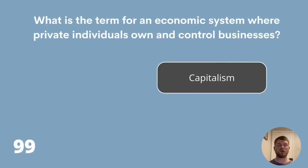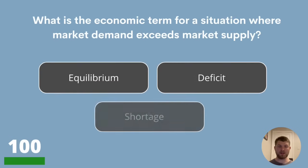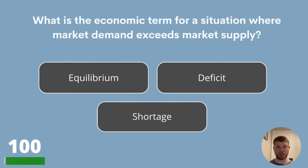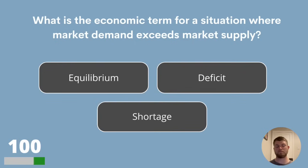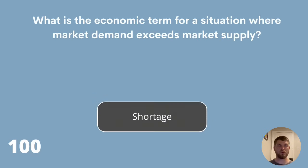And question 100. What is the economic term for a situation where market demand exceeds market supply? Equilibrium, deficit or shortage? The answer is shortage.